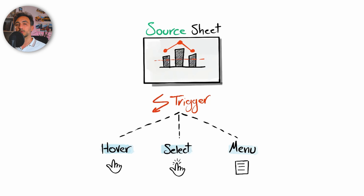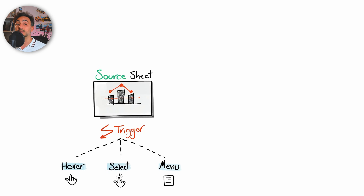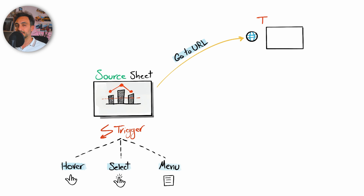So far we have defined three things for Tableau: the starting point — the source sheet; the second thing — what can trigger the action; and the last thing you have to define for Tableau is what can happen once the action is triggered. Here we have six different options or action types.